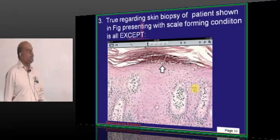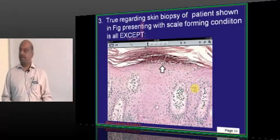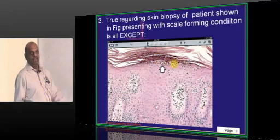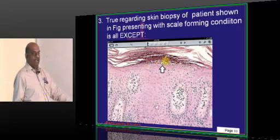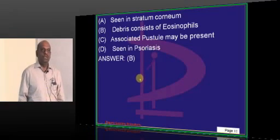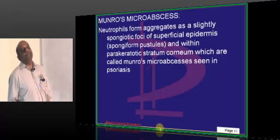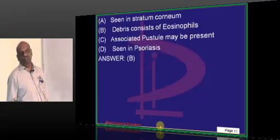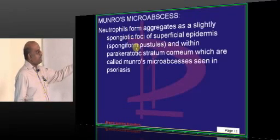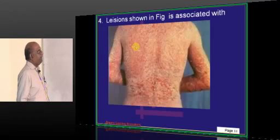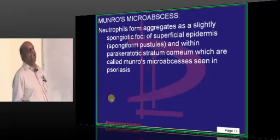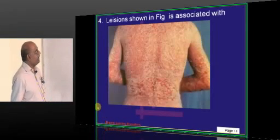In a skin biopsy of a scale-forming condition, you have accumulation of WBCs, which is called a micro-abscess. This is called Munro microabscess, which is seen in psoriasis. The debris basically contains neutrophilic aggregates — it does not contain eosinophils — and this is what you have to appreciate.